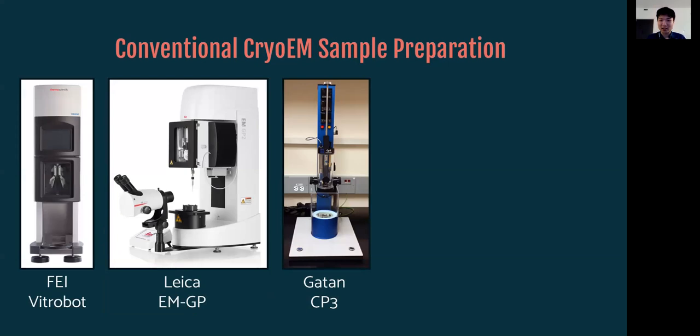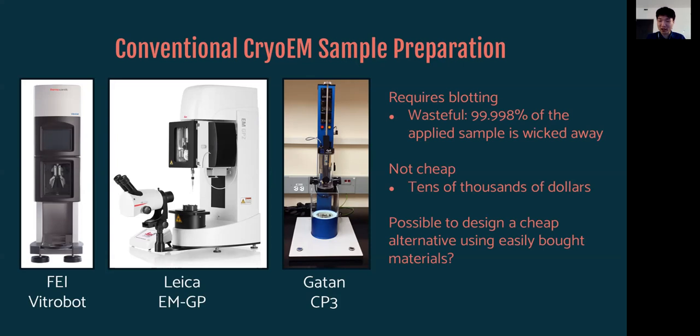Many conventional sample preparation devices are being used currently. So these are the more popular ones such as the VitroBot, Leica GP and Gatan CP3. So all these are good workhorses that utilize the blotting technology and have been used for many cryo-EM papers and many labs around the world. So they work really well and produce consistent grids. One of the issues that they have is that it is quite wasteful. So all these devices require blotting, as I mentioned earlier, which you slap a piece of filter paper and wick away a lot of the sample. And actually 99.998% of the sample is wicked away by this technology. So you actually lose a lot of protein. Second of all, these devices are not cheap. They cost tens of thousands of dollars.